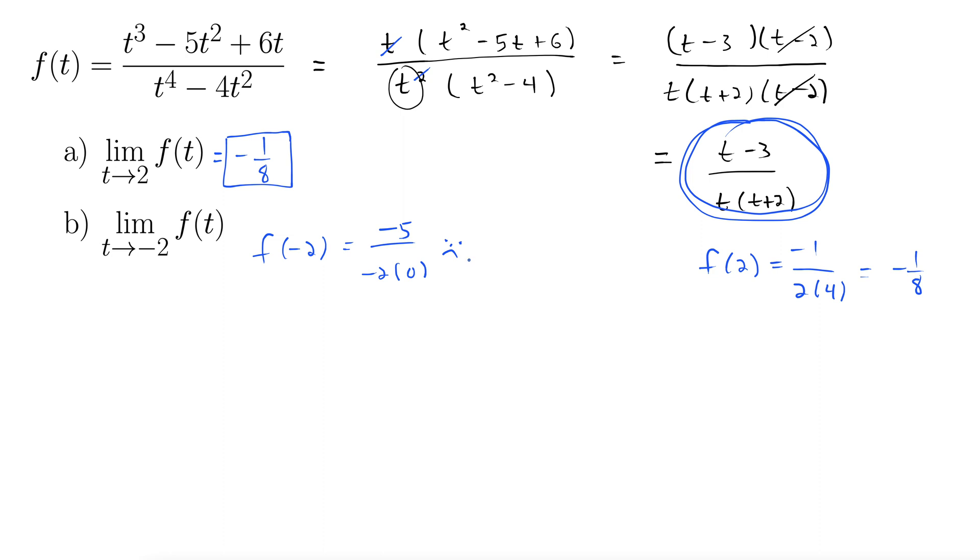The way we do that is to approach this thing from the left and from the right. So we need to check out the one-sided limits and see what those do. So let's do the limit as t goes to negative 2 from the left of t minus 3 over t times t plus 2.